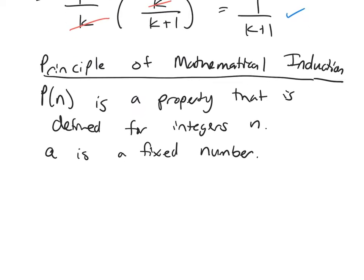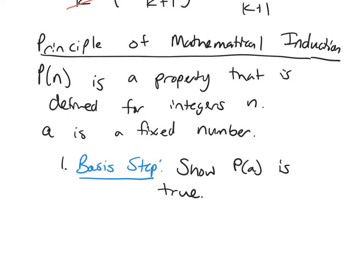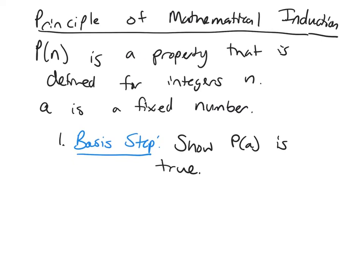And so you have two steps in mathematical induction. The first step, which is called the basis step. And what you do is you're going to show P of a is true. Show that the property is true for some initial value.